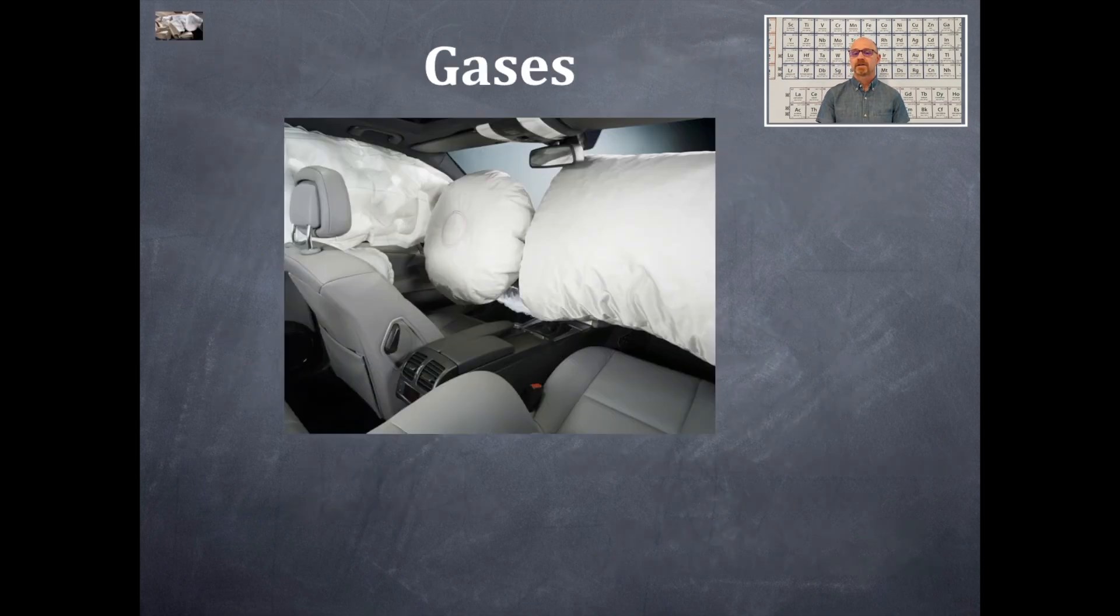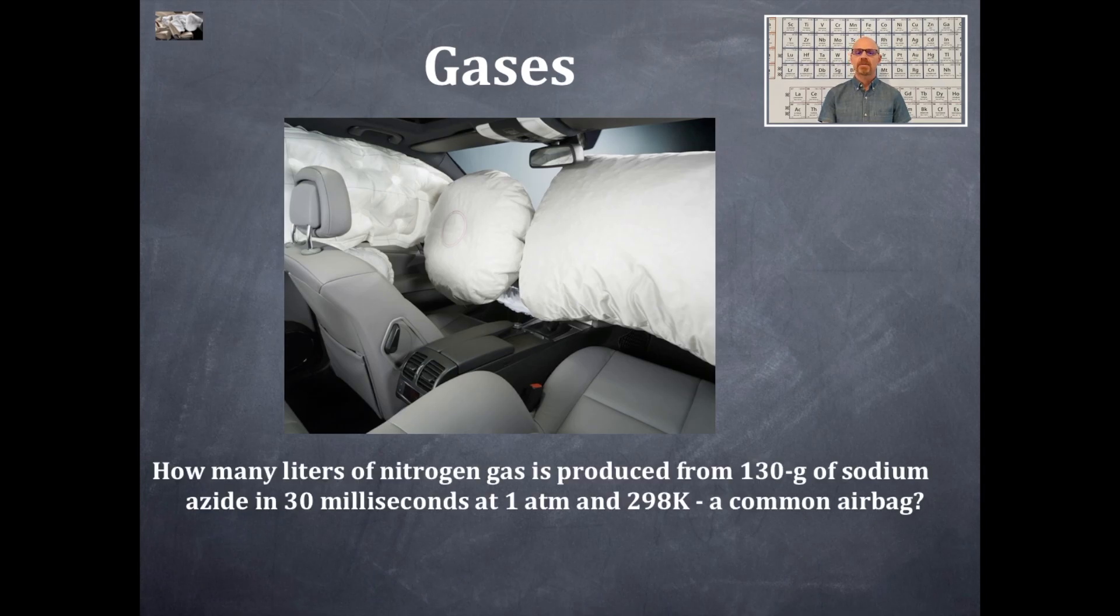So there's a car with airbags that have been deployed, and that's a really important component to gases, and that's an excellent application to gases of this chemistry unit. How many liters of nitrogen gas is produced from a 130 gram sample of sodium azide in 30 milliseconds at 1 atmosphere at 298 Kelvin? That's a common airbag. So this is the equation.